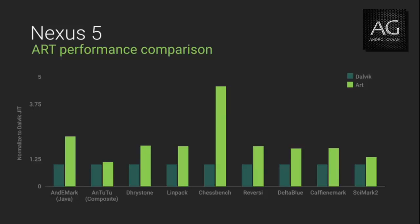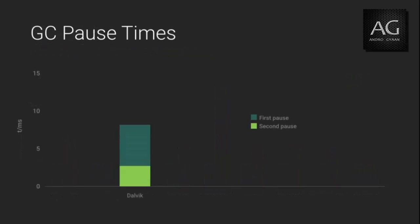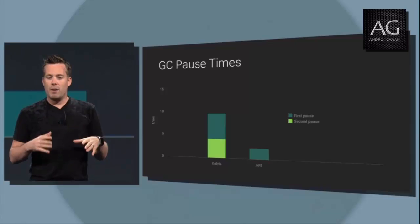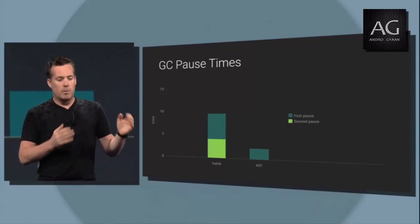ART also has a brand new garbage collector and memory allocator. This dramatically reduces the number of pauses and the duration of pauses associated with a garbage collection event. As a result, your app runs more smoothly. If you take a look at Google Maps on both Dalvik and ART, first you'll notice the number of pauses have reduced from 2 to 1. But also the pause duration has reduced from roughly 10 milliseconds down to about 2 to 4 milliseconds. So now, if it's comfortably in a VSync window, no more application stutters.